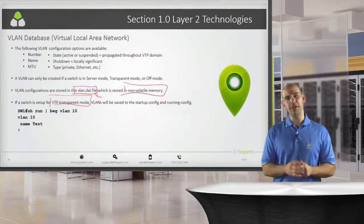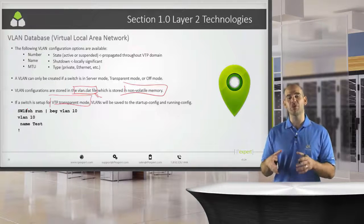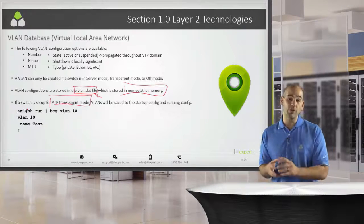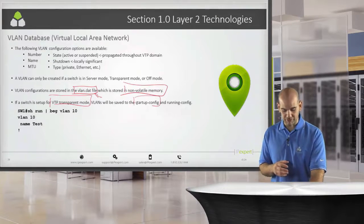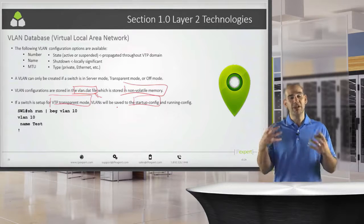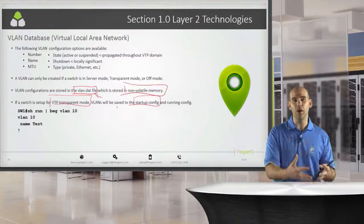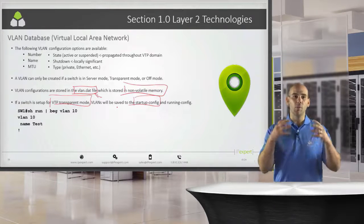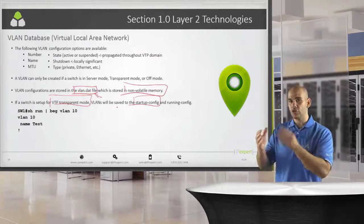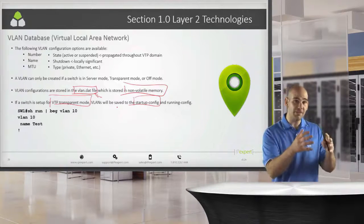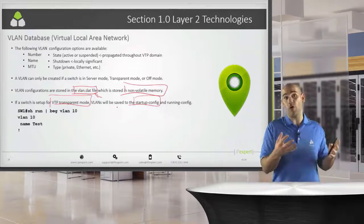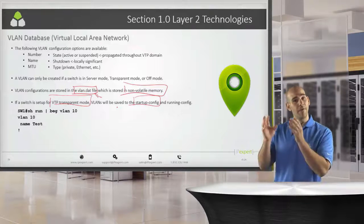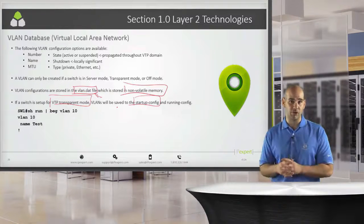If we're in VTP transparent mode, what's actually going to happen is we will not only store our VLANs in our VLAN.dat file, but we're also going to store them in the startup configuration. When the device boots up, we're going to compare what VTP mode we're running and what is in the VLAN.dat file versus what is in the running configuration. If we are in VTP transparent mode or off, what is in the VLAN.dat file is actually going to be ignored, and we are going to pay attention to the VLAN configuration that is in the startup configuration.